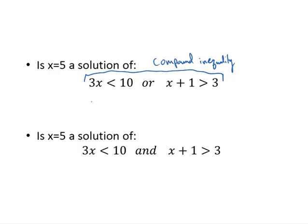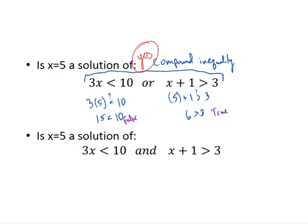We check: is x equals 5 a solution? Well, 3 times 5 — is 15 less than 10? That comes back false. Checking the other one: is 5 plus 1 greater than 3? Well, 6 is greater than 3 — that comes back true. For the word 'or', we only need at least one part satisfied. Since one condition was satisfied, x equals 5 is a solution.